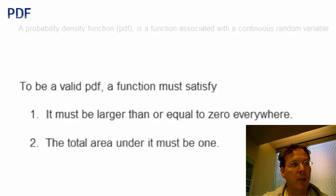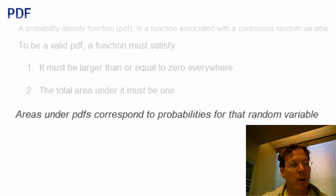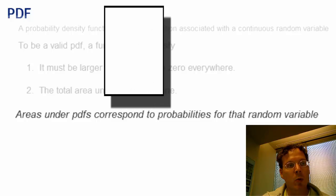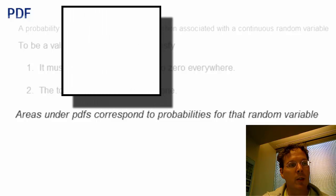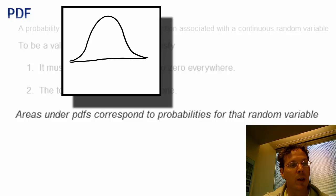Here is the basic rule of a probability density function: areas under probability density functions correspond to probabilities for that random variable. For example, if intelligence quotients are normally distributed with a mean of 100 and a standard deviation of 15, that implies the population follows a specific bell-shaped curve. The probability that a person drawn from a sample has an IQ between 100 and 115 is this area right here.